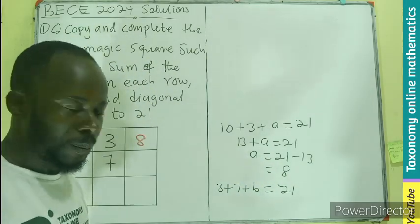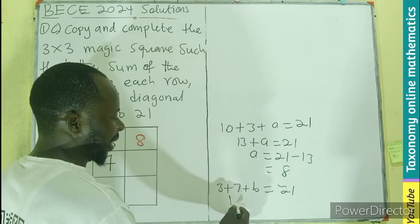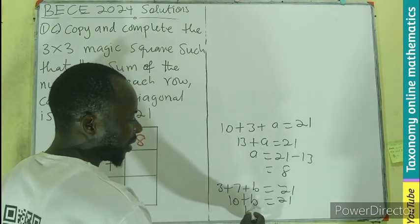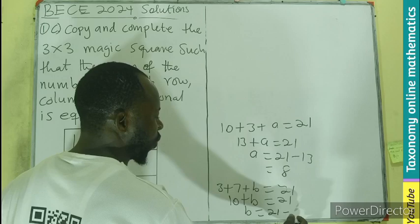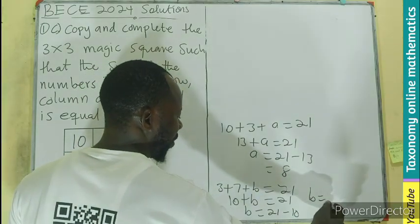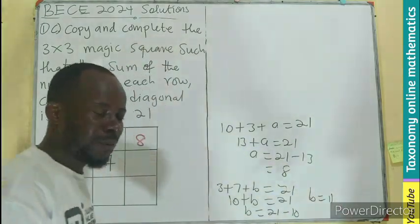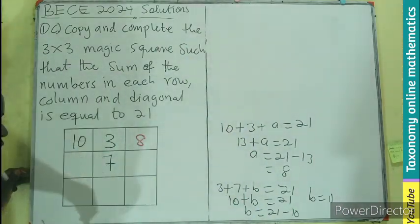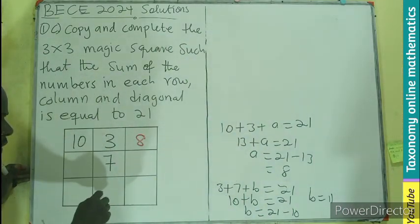b equals 21 minus 10. So b is going to be 11. So in this row, or this is the column, right? This column I'll be having 11, 7.